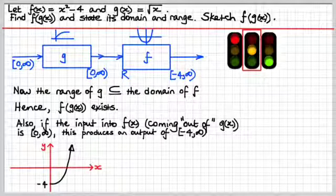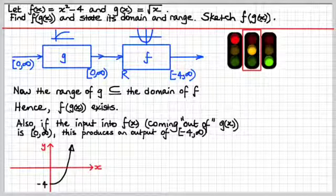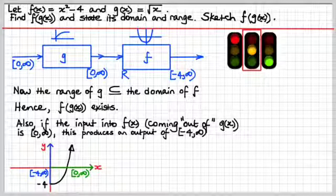So, that's what happens. We're putting in from 0 to infinity into the second function. And we're going to get from minus 4 to infinity as the output. There's the input, I've just marked it in green, the x domain into the second function,